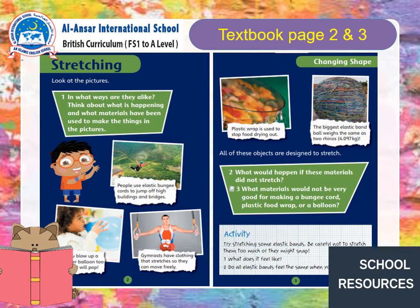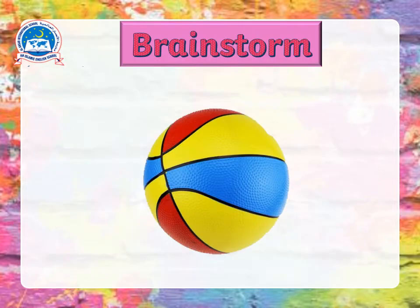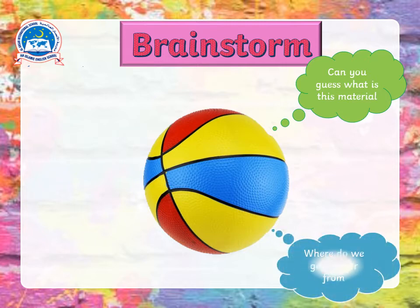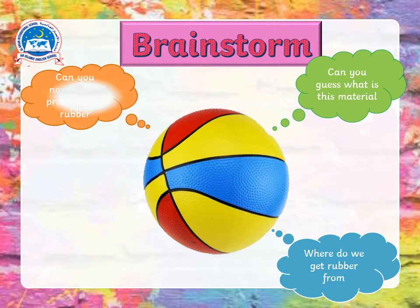Moving on — here are your textbook pages two and three, you may refer to these. Let's brainstorm: what do you see here in the picture? Of course it's a ball, but what material is this ball made from? It's rubber — well done! So where do we get rubber from? We get it from a rubber tree. Can you name some properties of this rubber ball? You can pause the video and take your time.